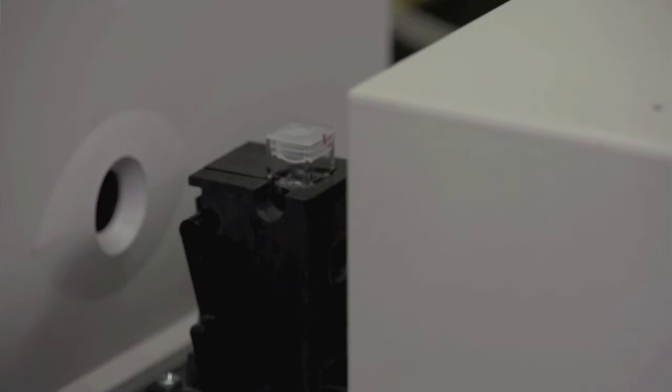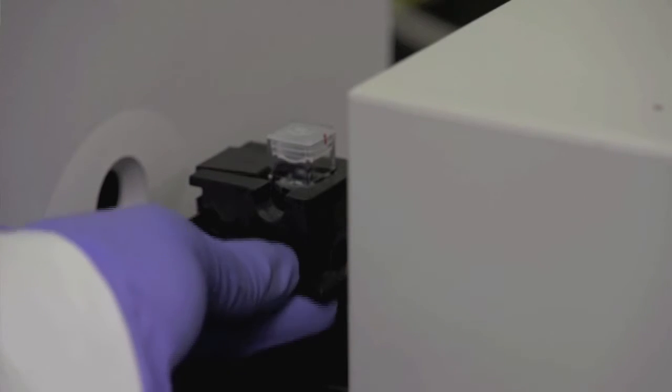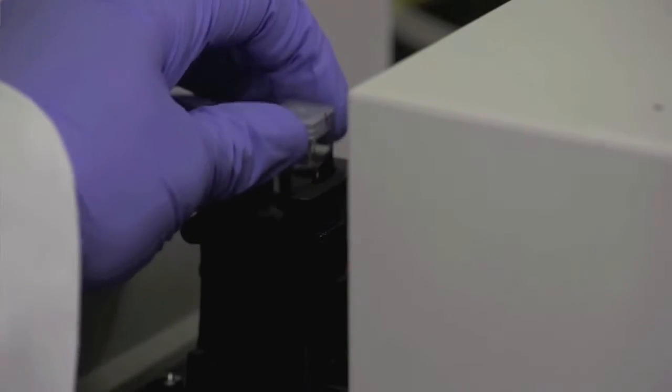Now that we've collected the background, we are ready to collect a sample of the cyanine dyes. To remove the cuvette, lift the arm up to unlock the cuvette from the sample compartment and remove the cuvette.